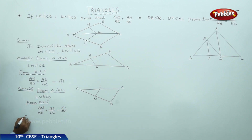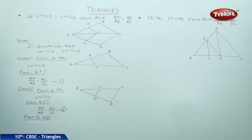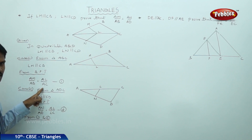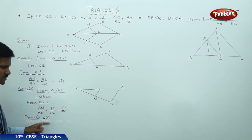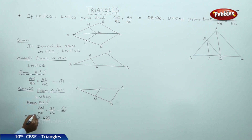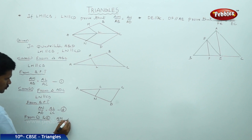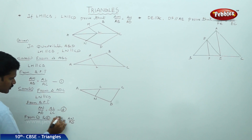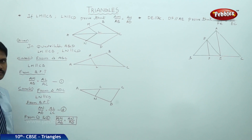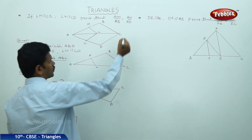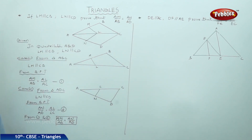From equations 1 and 2, the RHS values are the same: AL/AC = AL/AC. Therefore, AM/AB = AN/AD. Hence proved. Now let us come to the second example.